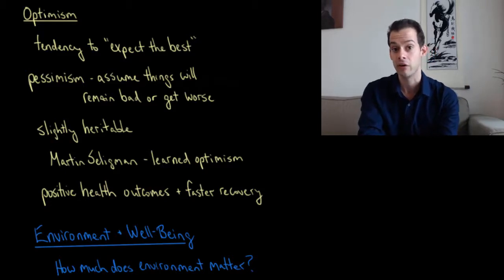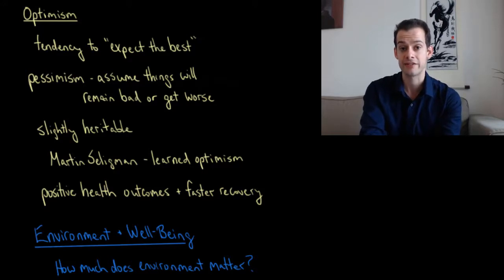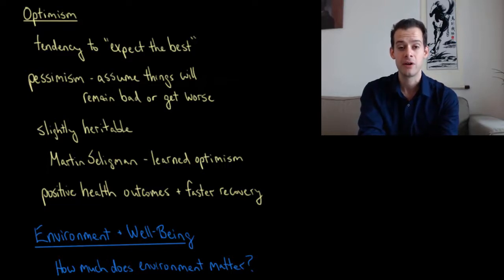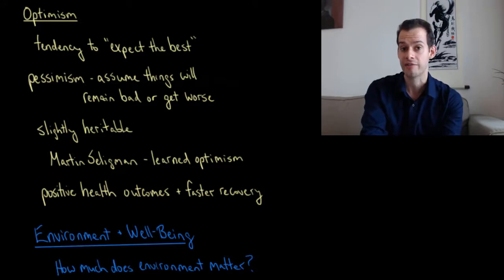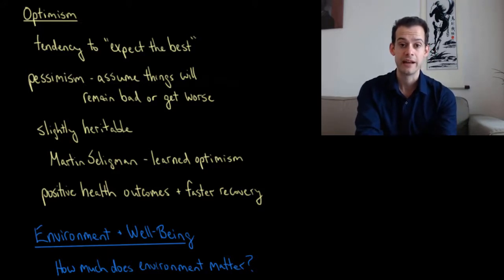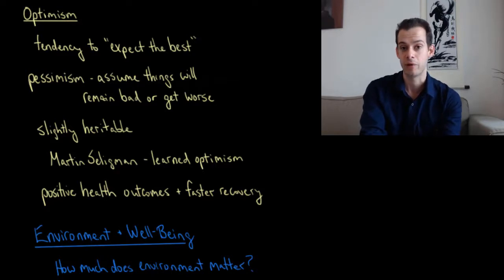This brings us to Martin Seligman's idea of learned optimism, the opposite of his idea of learned helplessness. The idea of learned optimism is that we can train ourselves to be more optimistic. We can teach ourselves how to look for the best possible outcomes and develop a belief that those are the things that will occur. One study with college students found that those who were given this training in optimism had better health outcomes in the following years. Optimism is associated with positive health outcomes and faster recovery from illness. It seems we can at least to some degree improve our ability to be optimistic and learn how to be more optimistic.